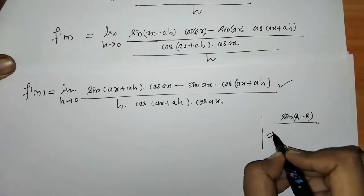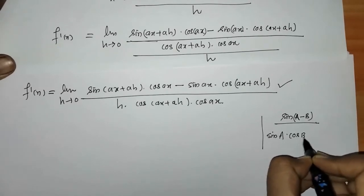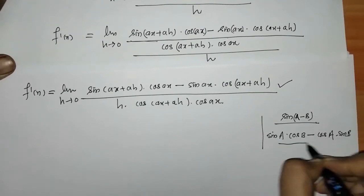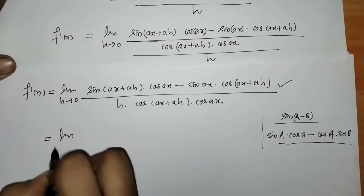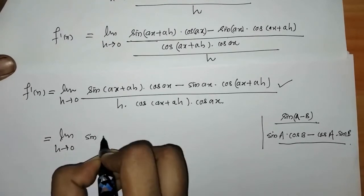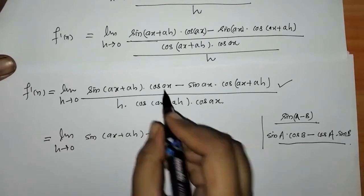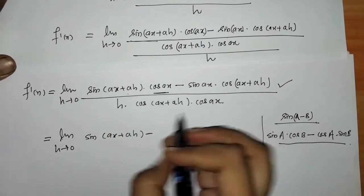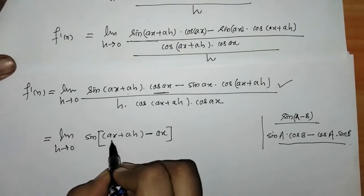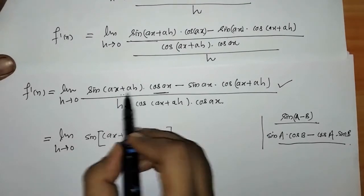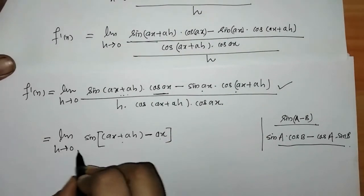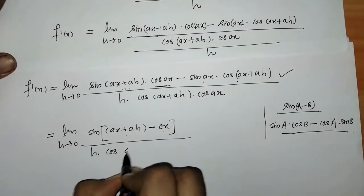We know the expansion of sin of a minus b: this is equal to sin of a into cos of b minus cos of a into sin of b. So we can write the numerator as sin of ax plus ah, using sin a into cos b minus cos a into sin b — this is the sin of a minus b expansion. And the denominator remains as it is.